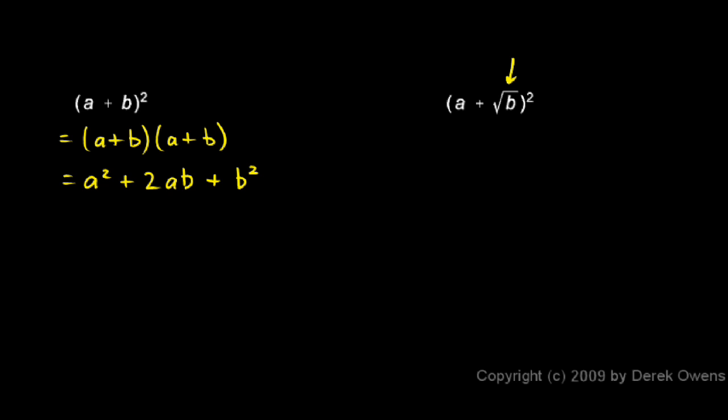This is the same thing, except we have a square root of b right there. So let's just rewrite this as two binomials, a plus the square root of b times a plus the square root of b, and do a FOIL on that. First is a times a, so that gives us an a squared.